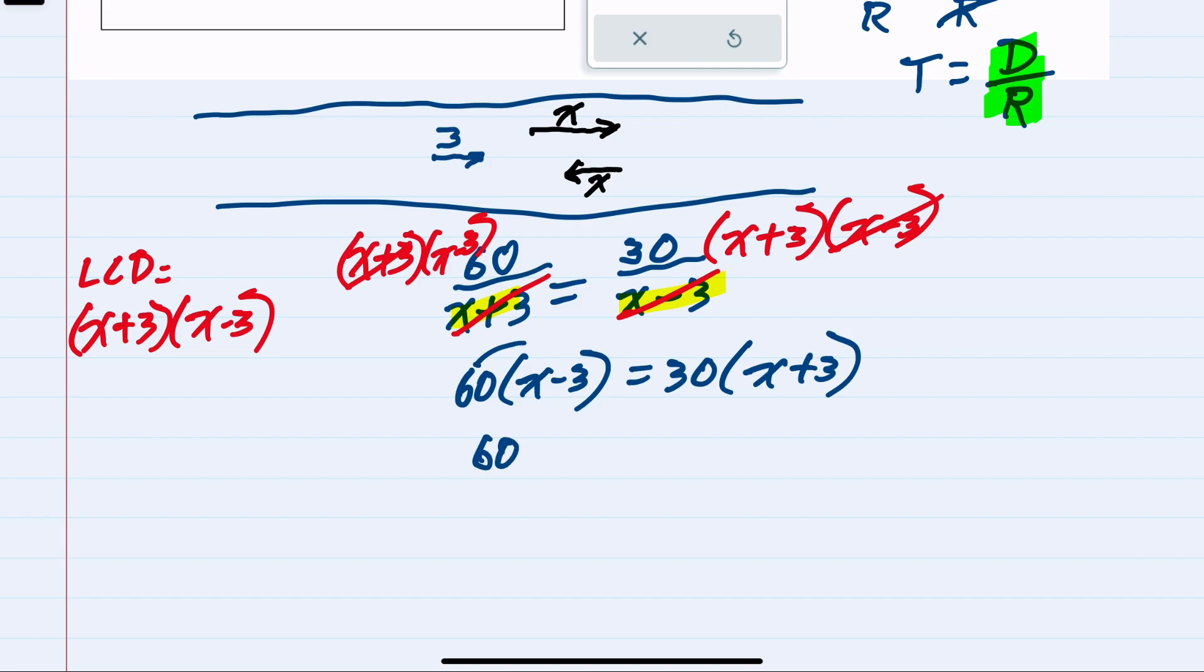60 times X is 60X. 60 times minus 3 is negative 180. Distributing on the right, 30 times X is 30X, and 30 times 3 is plus 90.